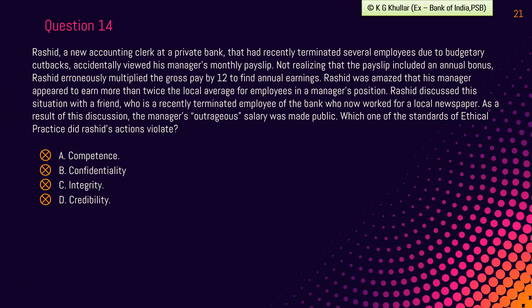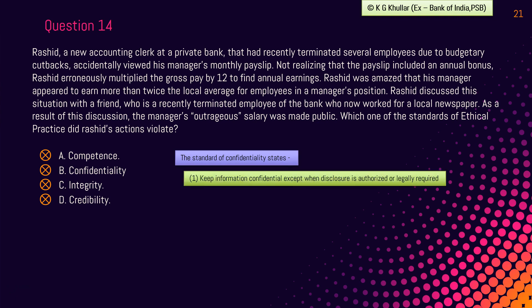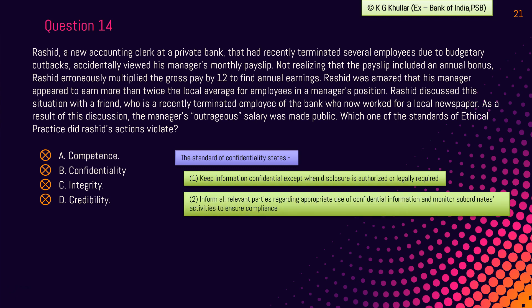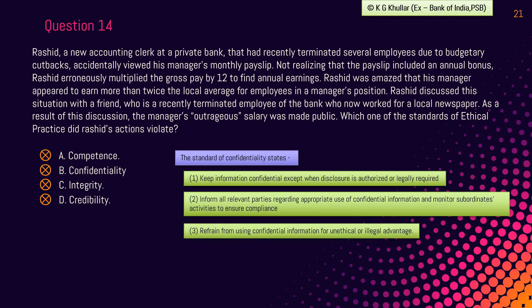The correct answer is option B — confidentiality. The standard of confidentiality states that each member has a responsibility to: first, keep information confidential except when disclosure is authorized or legally required; second, inform all relevant parties regarding appropriate use of confidential information and monitor subordinates' activities to ensure compliance; and third, refrain from using confidential information for unethical and illegal advantage. Hope the answer is clear.